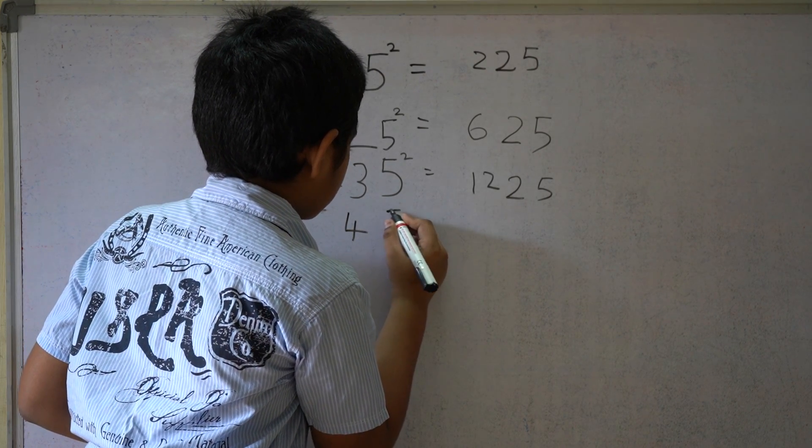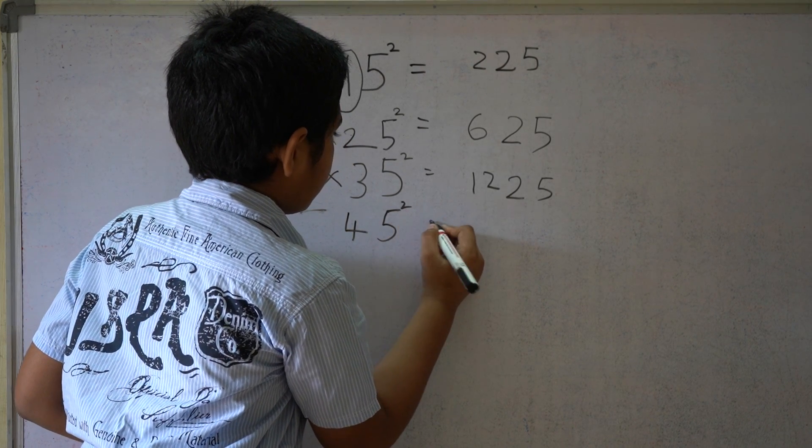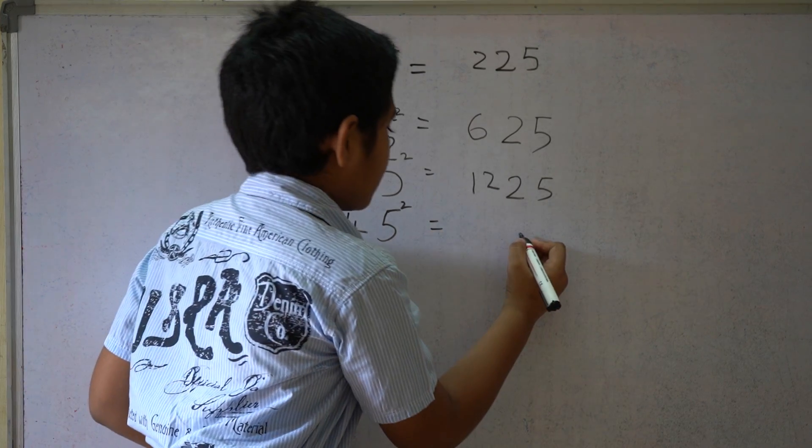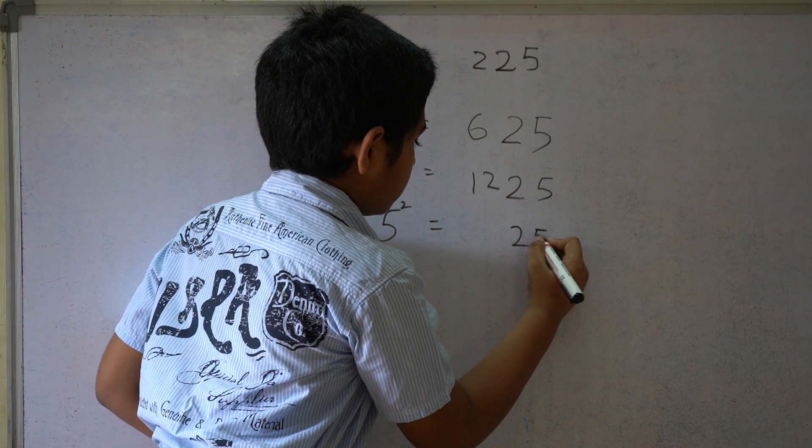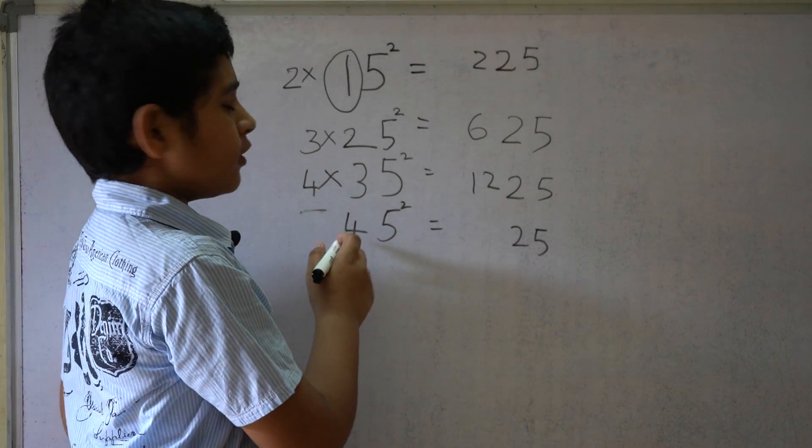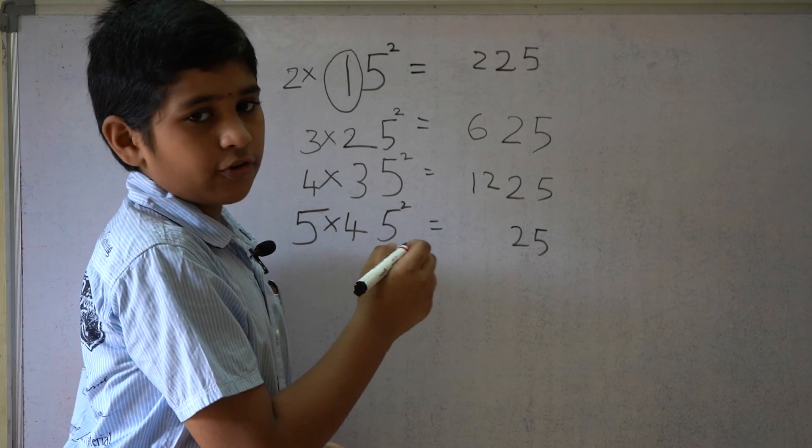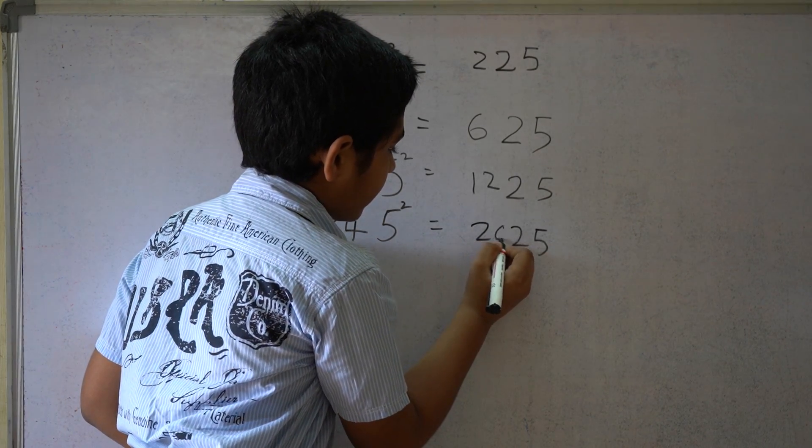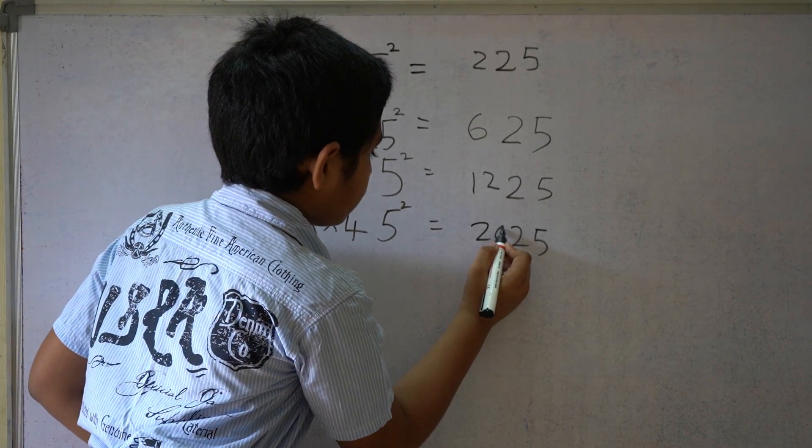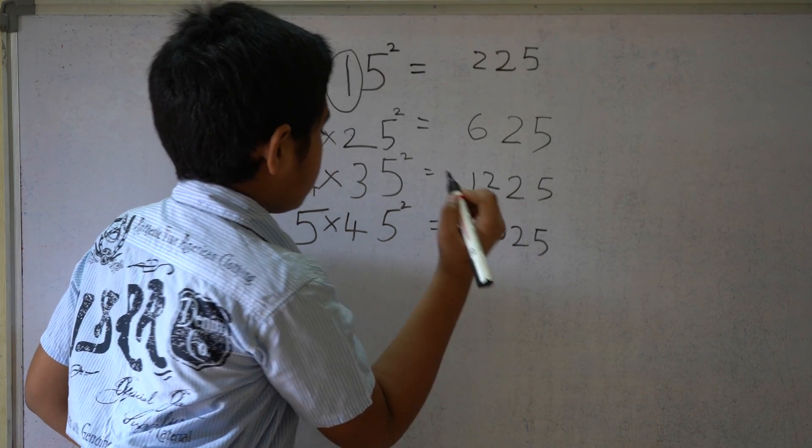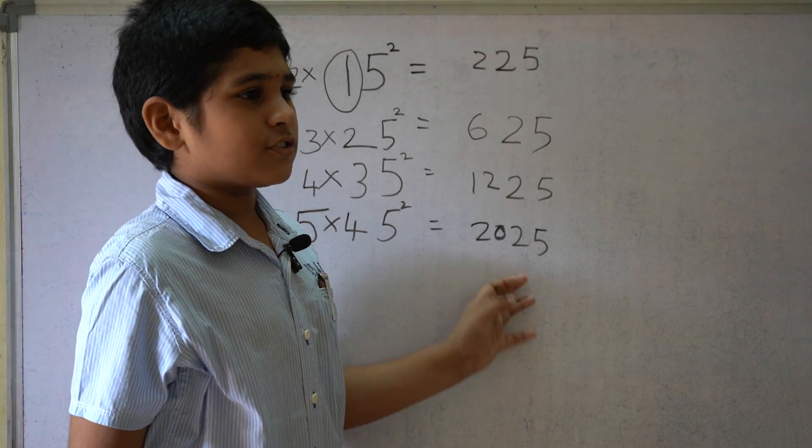45 square. 5 square equals 25. 4 times the next natural number 5 equals 20. So 2025.